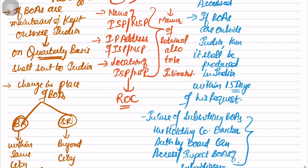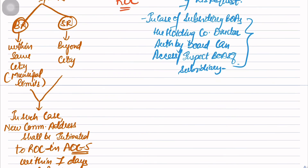This brings an end to one topic in this column called inspection. What is our next topic? Preservation. Preservation is quite simple to understand. Divide it into three parts.